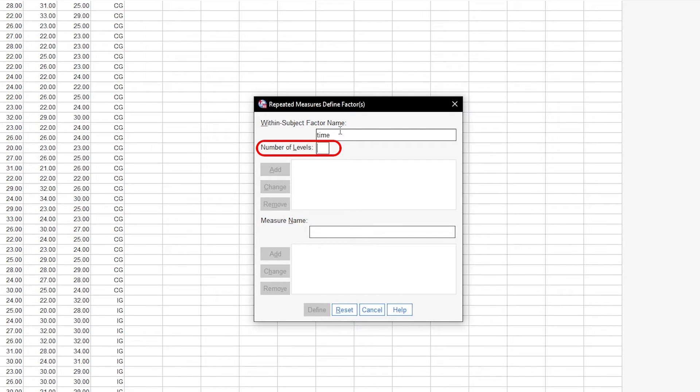The number of levels depends on how many measurements you have per individual. I have already mentioned that I have one initial measurement and four follow-up measurements, so I will enter five here. Measure name can be ignored if you have only measured one variable, which is usually the case. Then continue with define.